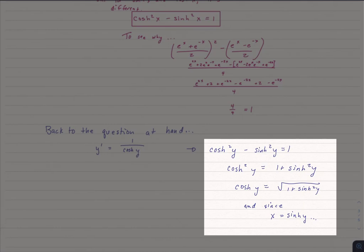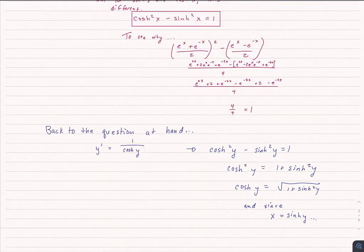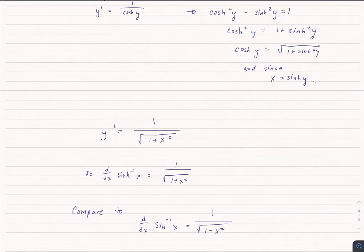But we know that x is, in fact, sinh of y, so that means that y prime is simply 1 over the square root of 1 plus x squared. And that's the derivative of sinh. That's the derivative of hyperbolic sine.